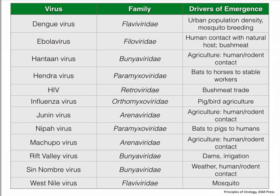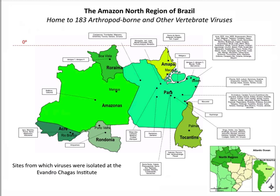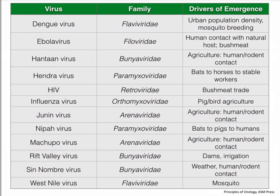Here are some examples of emerging virus infections — the virus name, family, and drivers of emergence on the right. Dengue virus spread via the international used tire trade spreading the mosquito worldwide. The bushmeat trade is a big factor in the spread of Ebola from bats to humans, as it is for HIV. We'll see how HIV went from monkeys into humans and was amplified by other human activities. Influenza virus emergence is a consequence of huge numbers of pig and bird farms growing animals for food consumption.